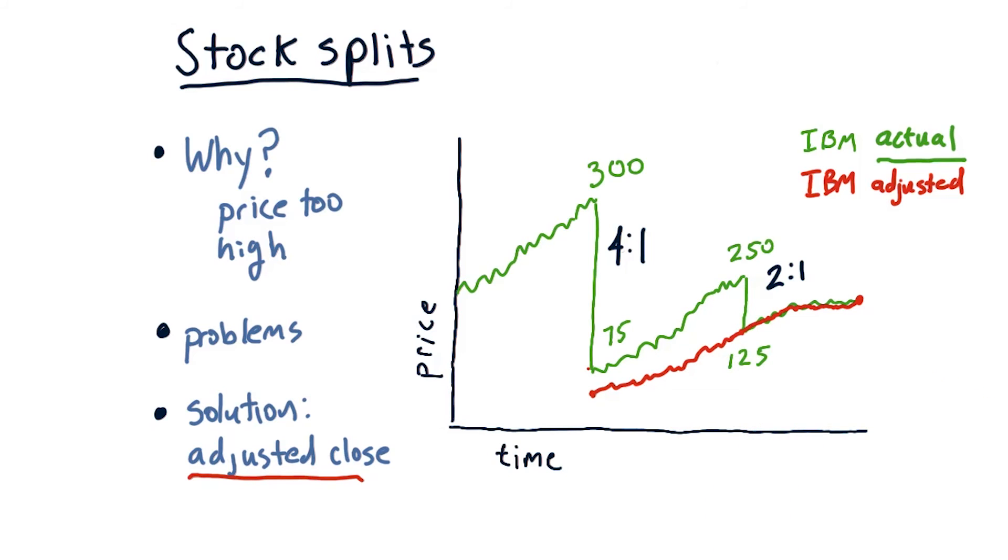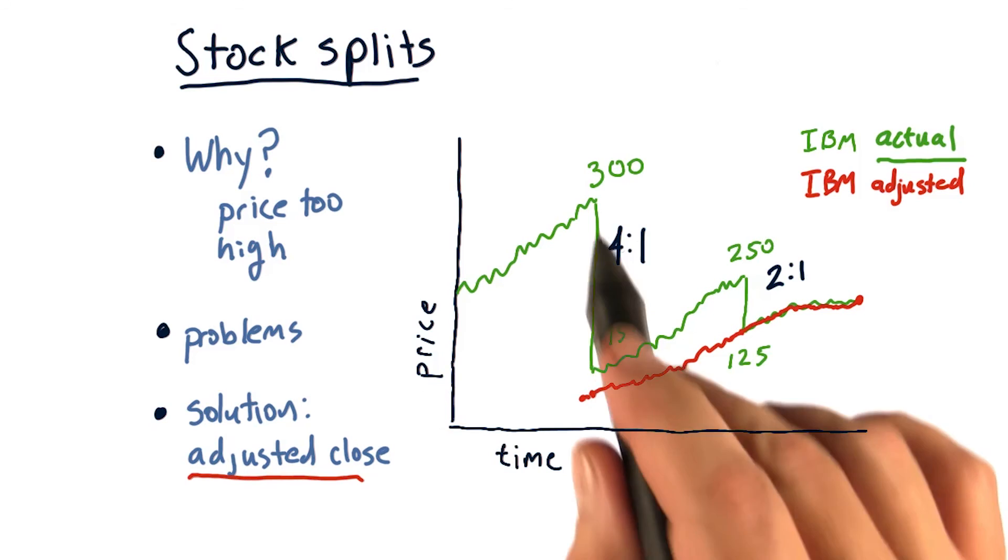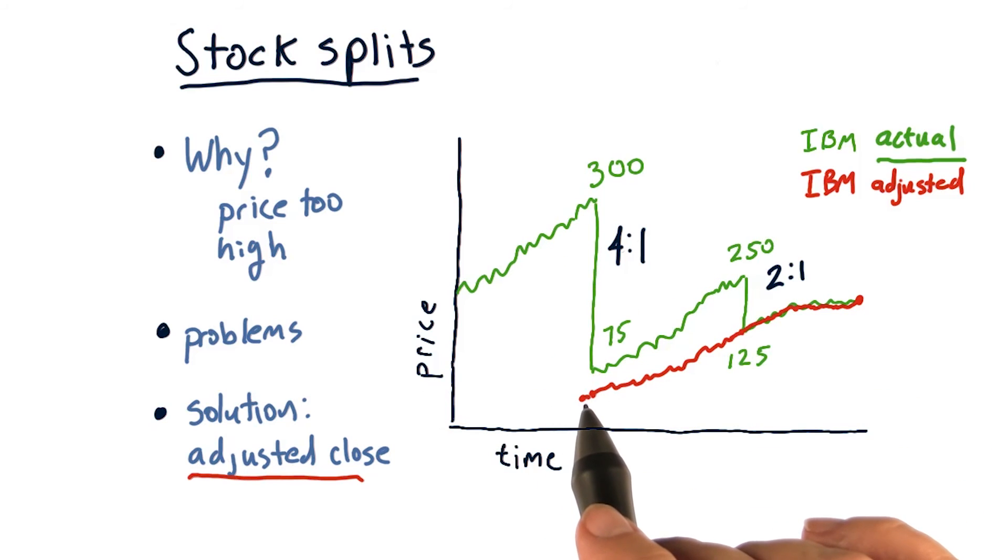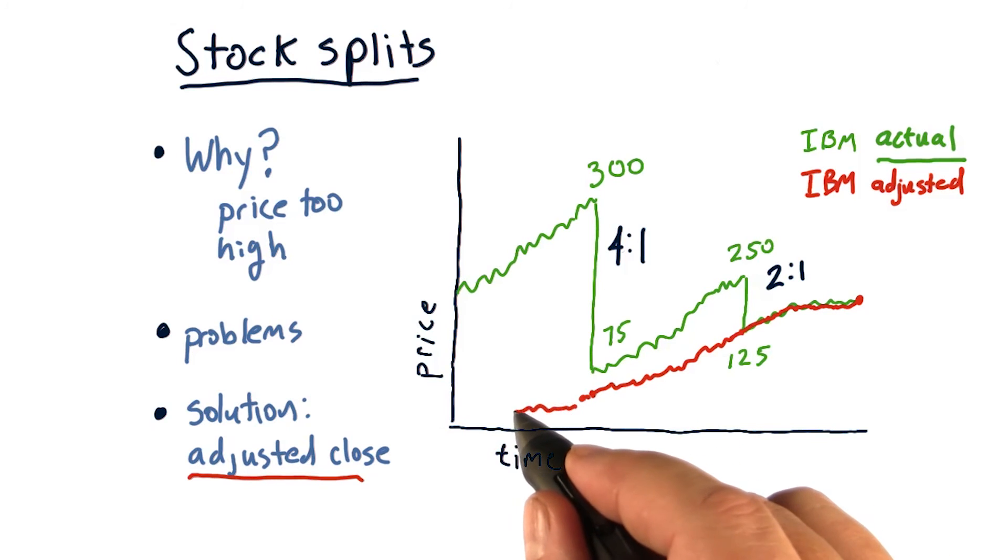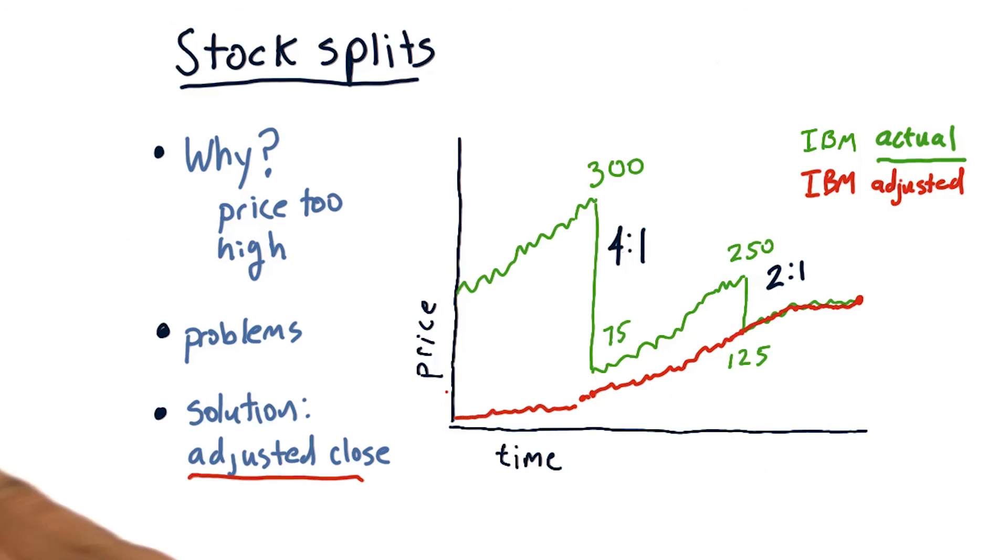Then when we get to this four to one split, we divide by two, and then by four. So that on this one day before that split, our price is in the neighborhood of about $70. And that continues back in time. And as we go back, we adjust for each of the splits in history.